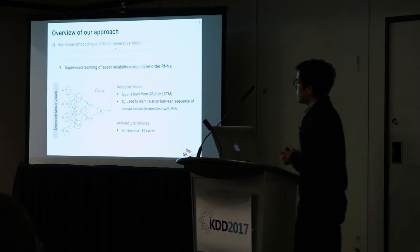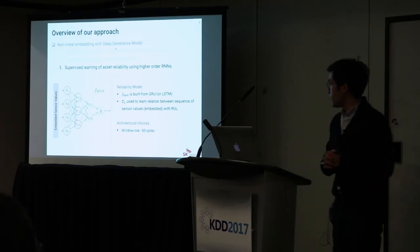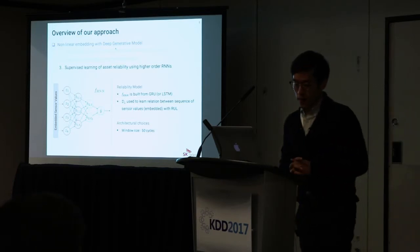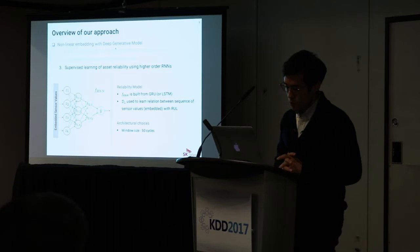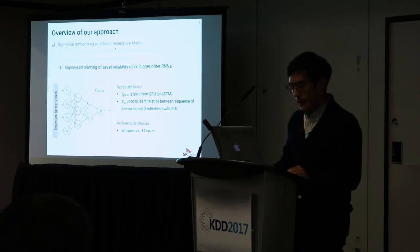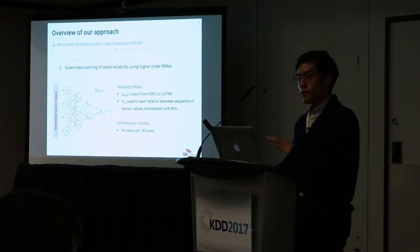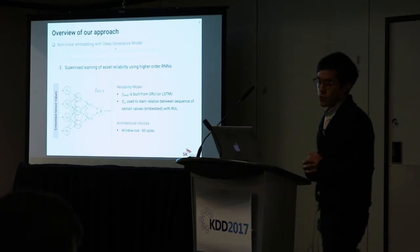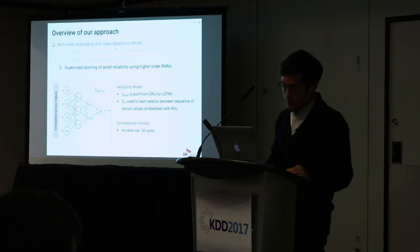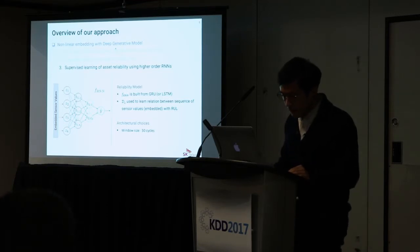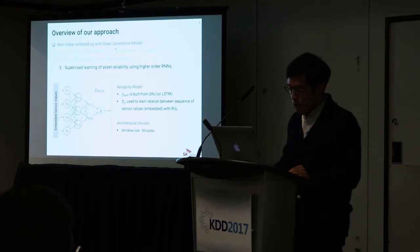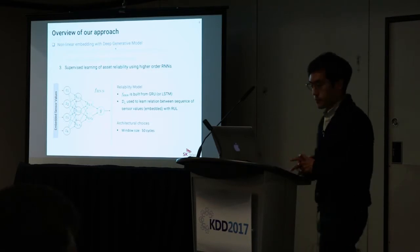Finally, after embedding, we use the embedded sensor values to build a reliability model. The reliability model is a second-order RNN — we use both GRU and LSTM, and found there is not much difference between the two. For simplicity, we used GRU for the final results. For the architectural choice, we used a window size of 50 cycles.